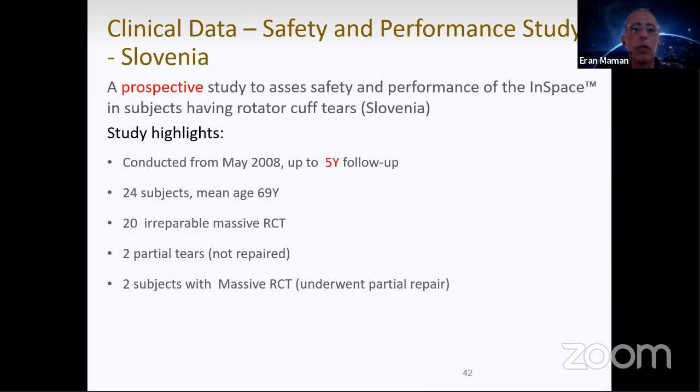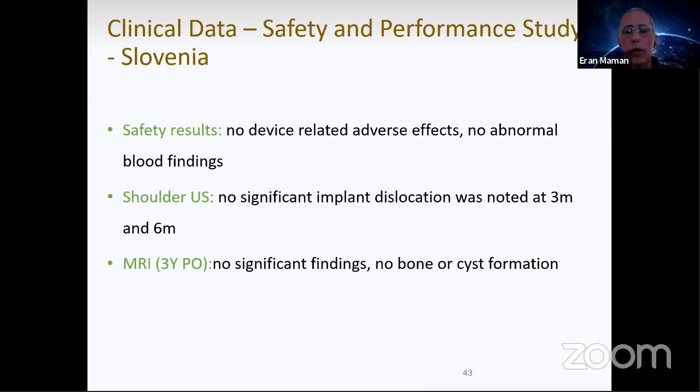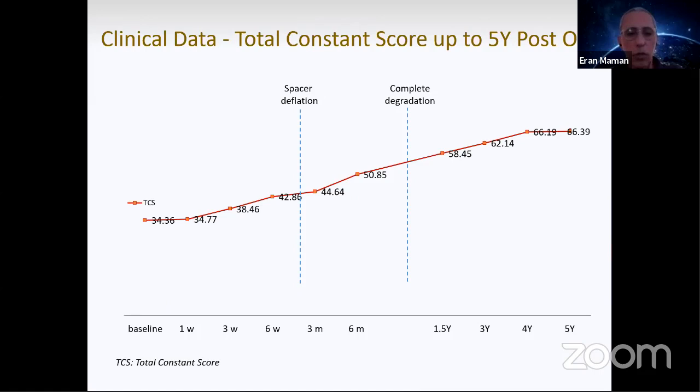What in terms of safety and performance? There are many studies now. The first was done in Slovenia, a prospective study with five-year follow-up starting from 2008. They were the first to try the balloon. 24 patients. The safety result was there were no safety-related adverse events. Ultrasound done at three months when the balloon is still functioning showed the balloon was in place. MRI after three months when the balloon is already gone, there were no bone cysts or anything special. The constant score started at 34 points at baseline and in five years reached 66.